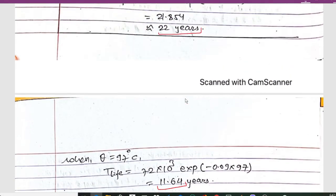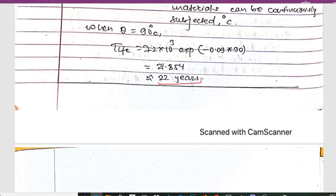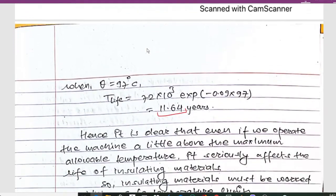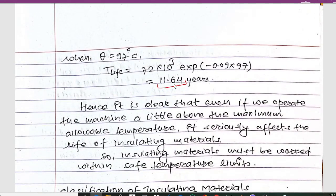We can conclude that when the temperature is 90 degrees Celsius, the life of the machine is 22 years. When the temperature is increased from 90 degrees Celsius to 97 degrees Celsius, the life is reduced to 11.64 years, which means it is reduced to half.